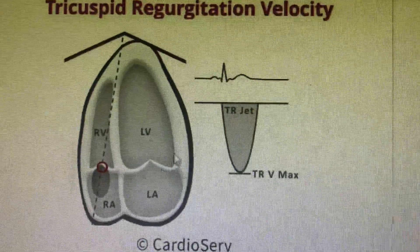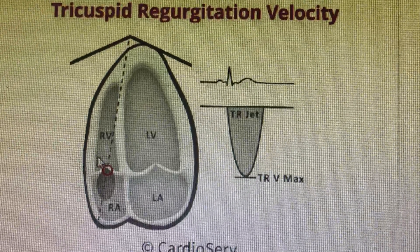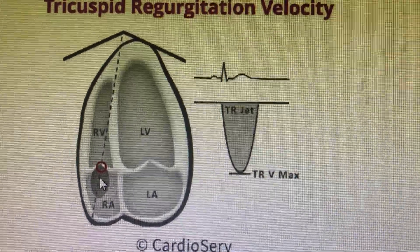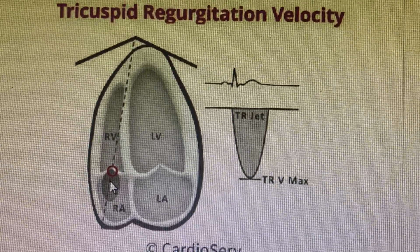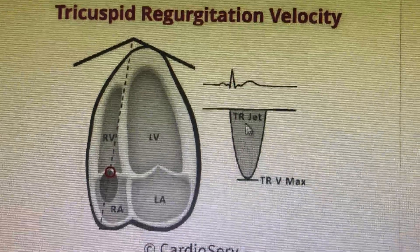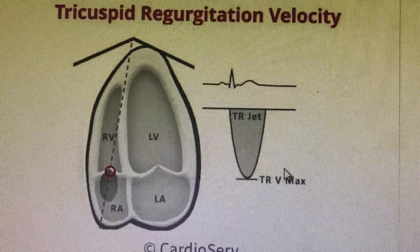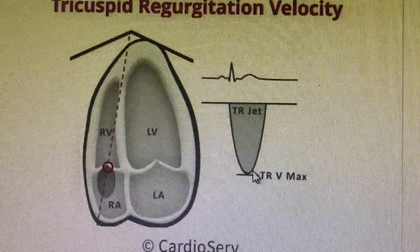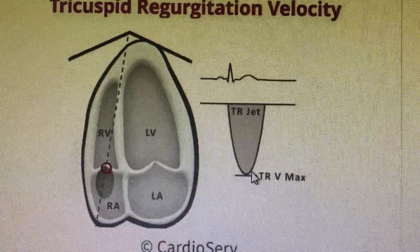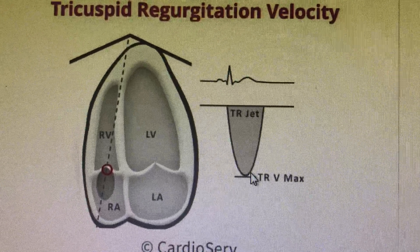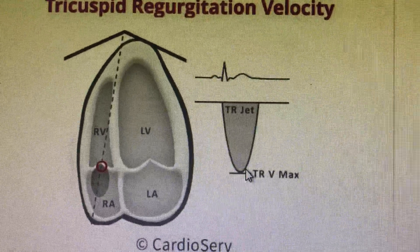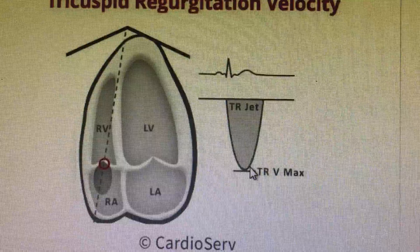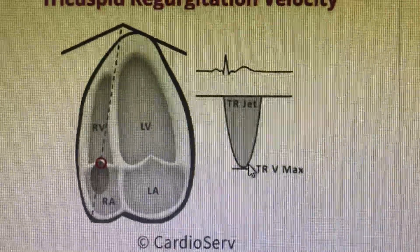The last parameter is the TR jet. You place the continuous wave Doppler cursor on the tricuspid regurgitation jet to obtain the TR velocity. This is important because pulmonary venous congestion with pulmonary hypertension is also a feature of diastolic dysfunction.